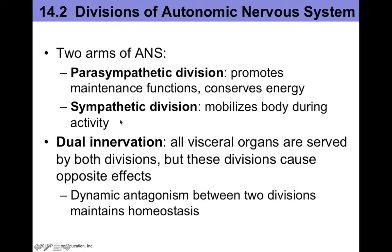Both arms of the ANS dually innervate pretty much all visceral organs. These divisions cause opposite effects, so we say they have dynamic antagonism. This means they can oppose the effects of each other, and by doing so, they can actually help maintain homeostasis.